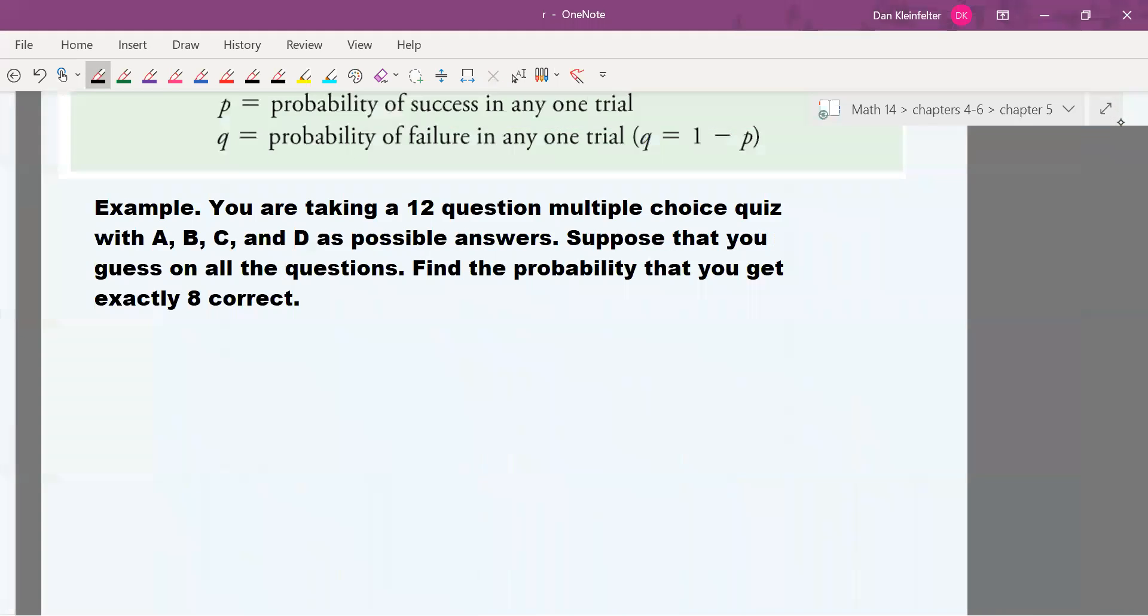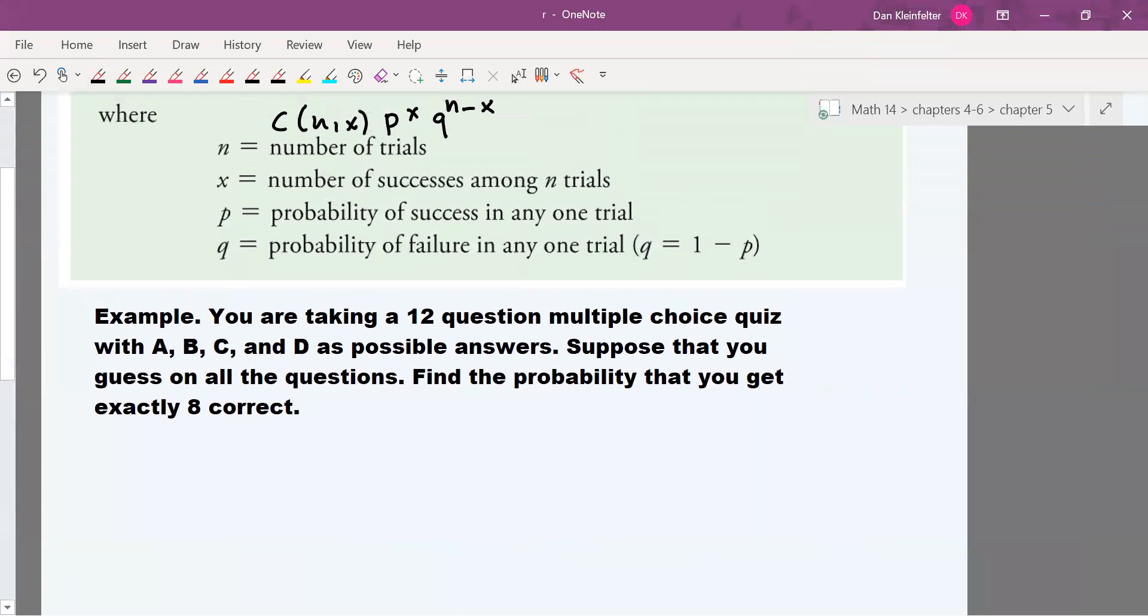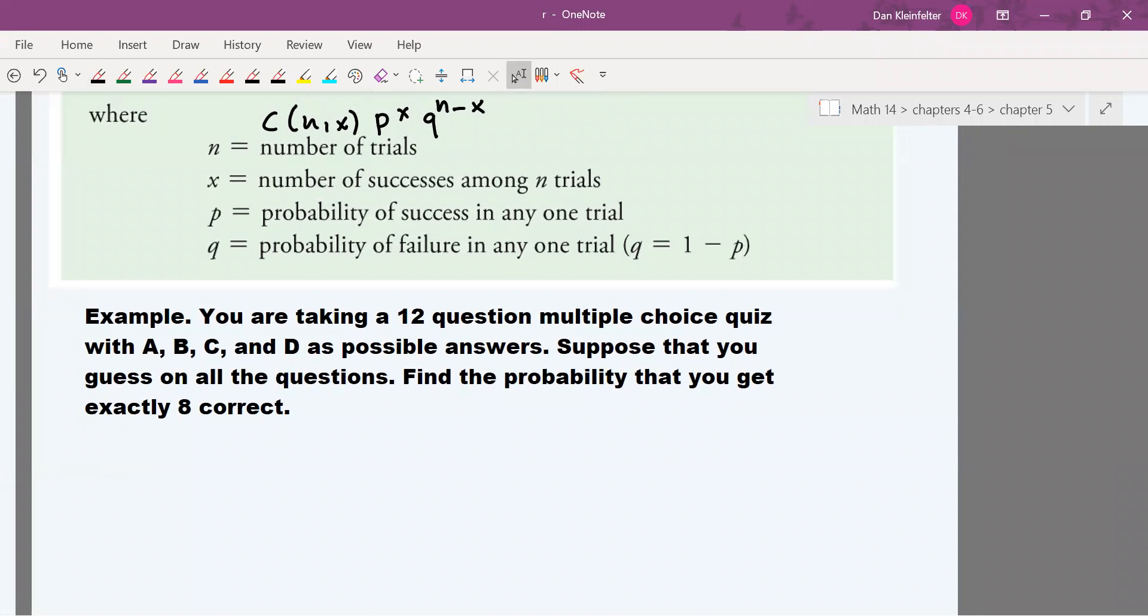So we're going to try this one here. So here it says you're taking a 12-question multiple-choice quiz. There's answers A, B, C, and D as possible answers. So there are four possibilities. We're going to assume that one and exactly one is the right answer for any given question. And we're going to guess on all the questions.